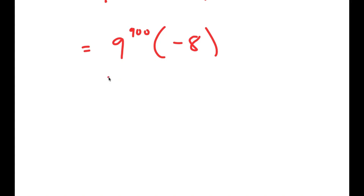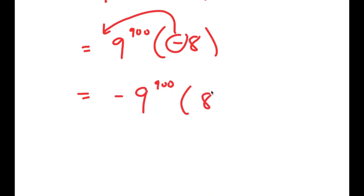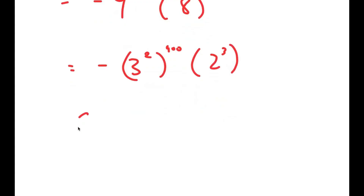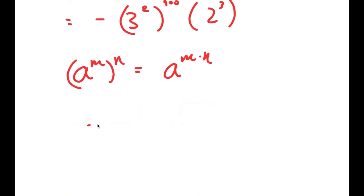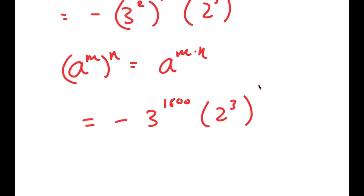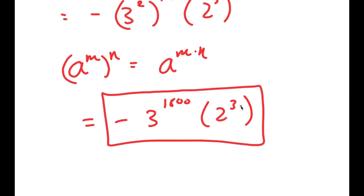We can't get the exact value because 9^900 is such a big number, but we can get the simplified form. I'll move the negative sign to the front to get negative 9^900 times 8. This becomes negative 3 squared to the power of 900 times 2^3. Using the property that a^m to the power of n equals a^(m times n), I get negative 3^1800 times 2^3. This is my final simplified solution.